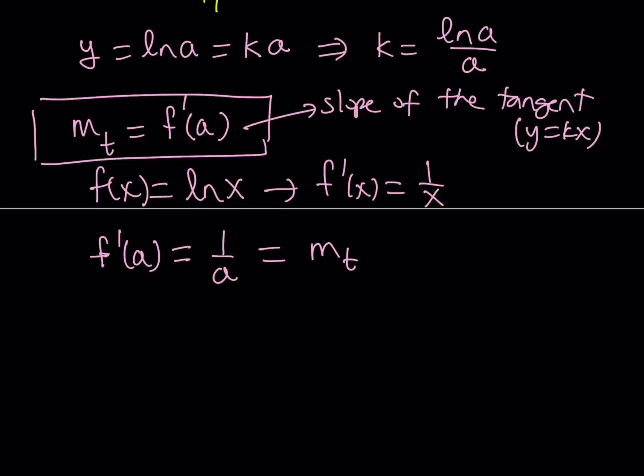So we can basically set this equal to k. From here, we're going to be getting k equals 1 over a. So we got two equations for k so far, k equals 1 over a, or k equals ln a over a.